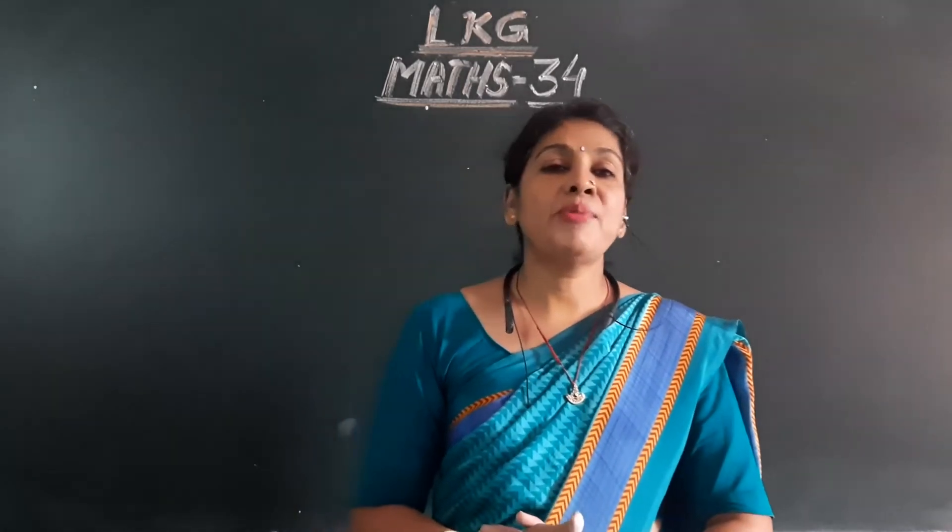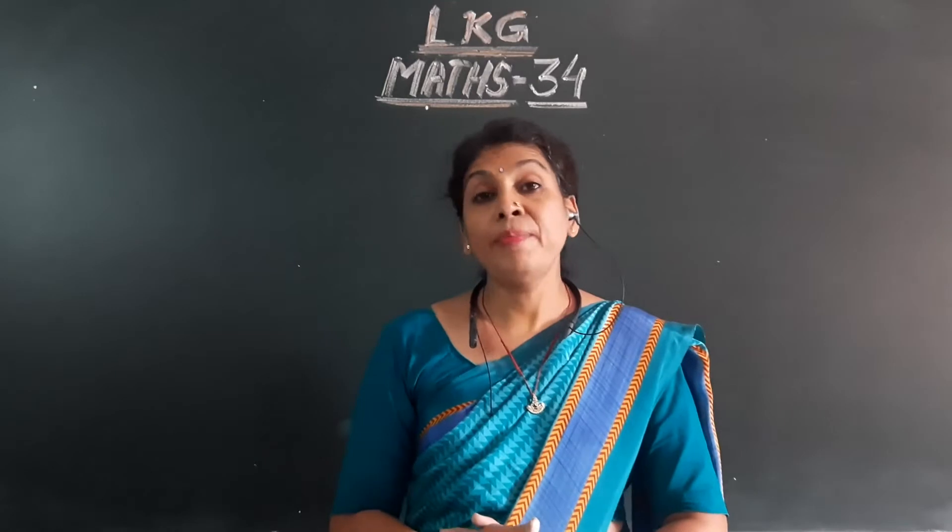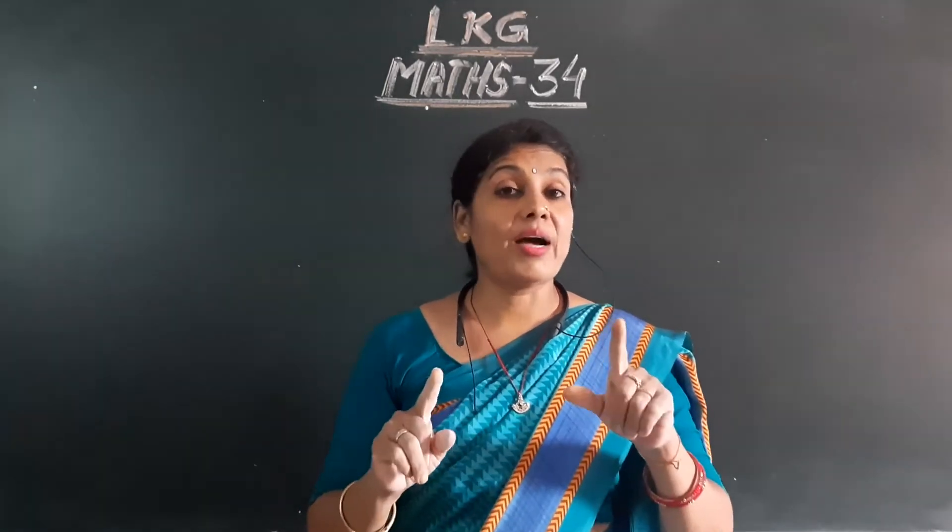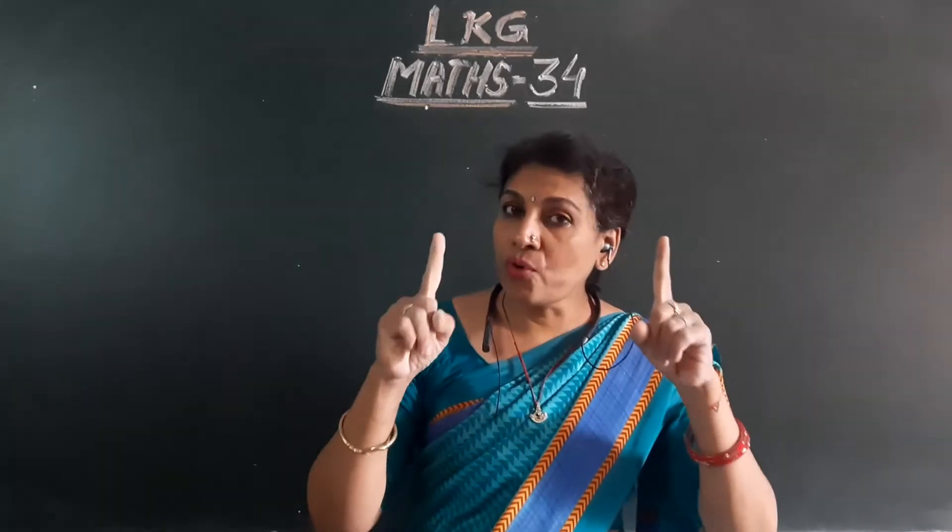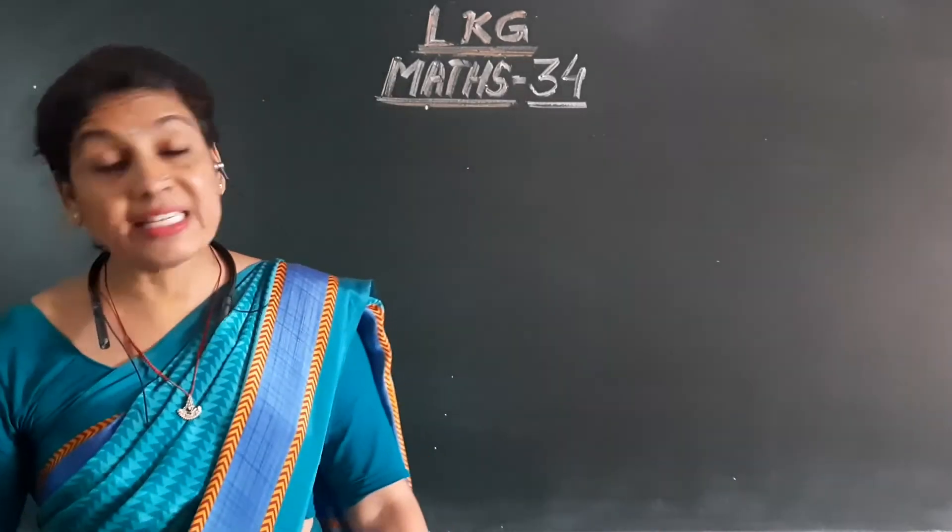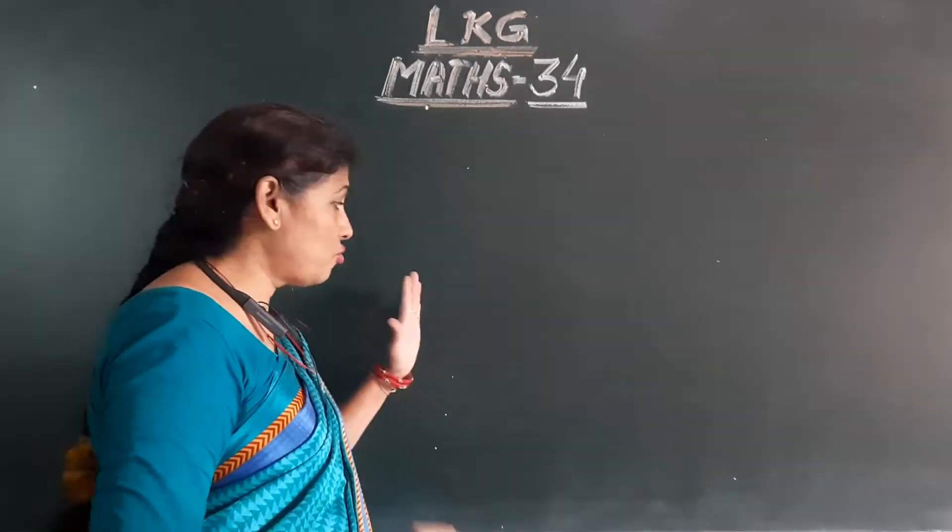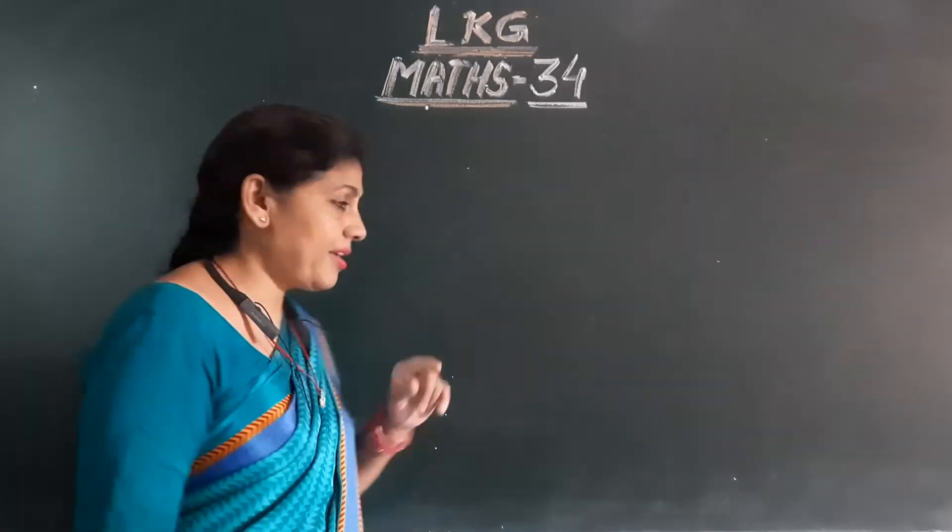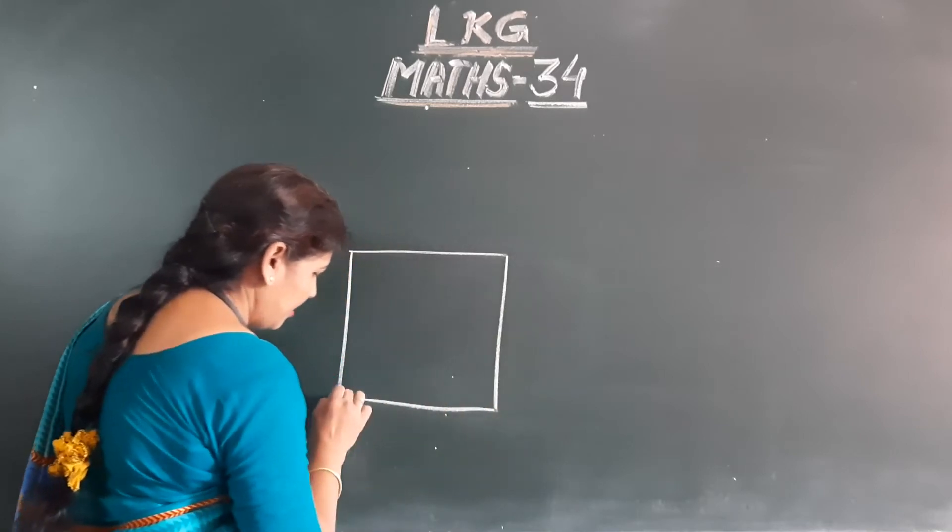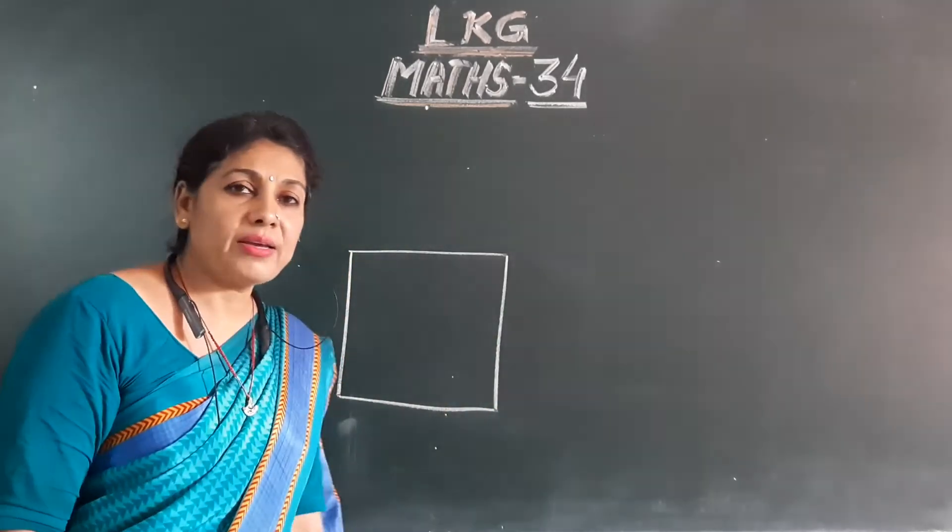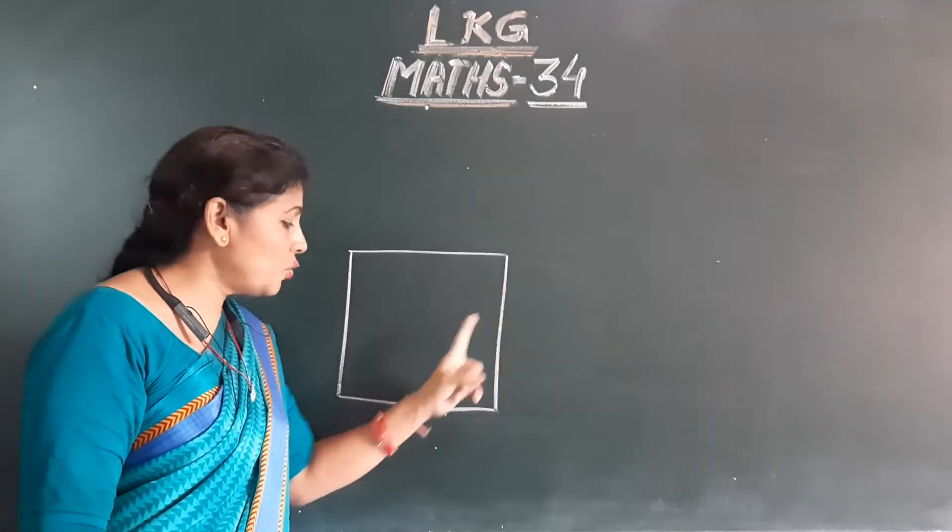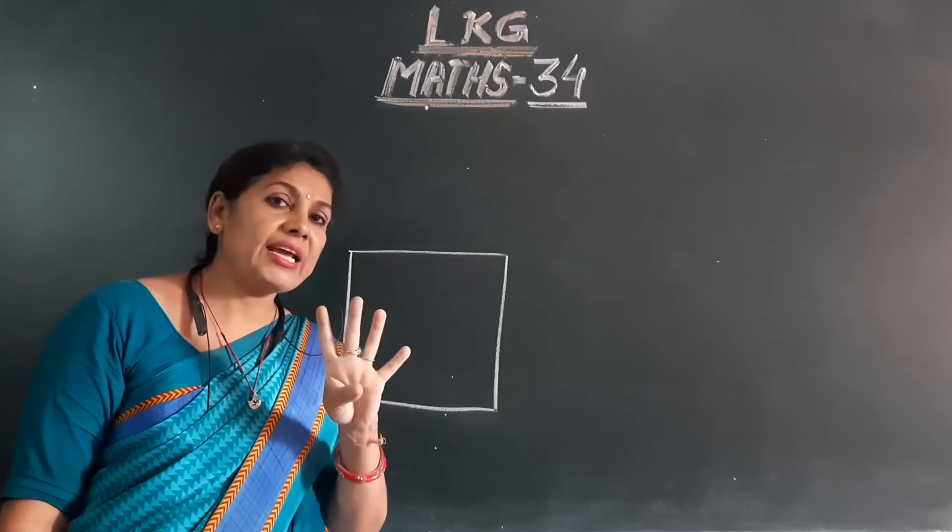Then in the last class, what did we teach? You learned about shapes. Which one? Square. Square means in square there are four lines that are equal. For example, I am drawing here a square. It is a square. In this square there are one, two, three, four. Four lines are there.